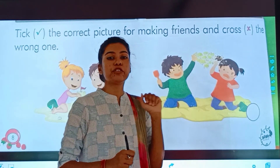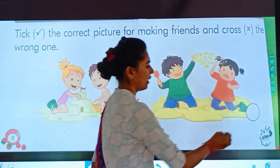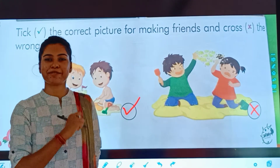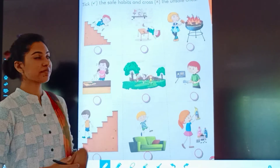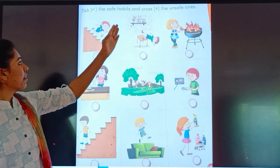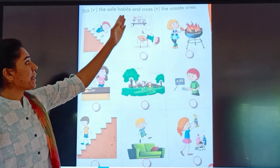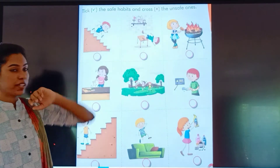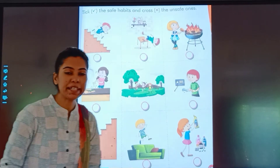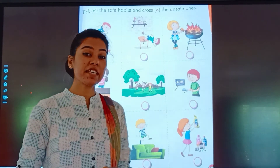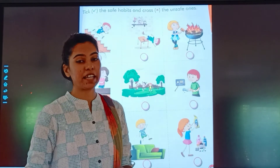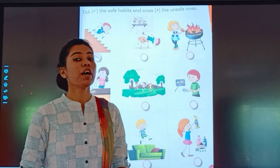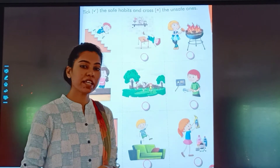And cross the unsafe ones. हमें उस picture में टिक करना है जिसमें safe habits दिख रहे हैं, और उसमें cross करना है जो unsafe है. Okay?